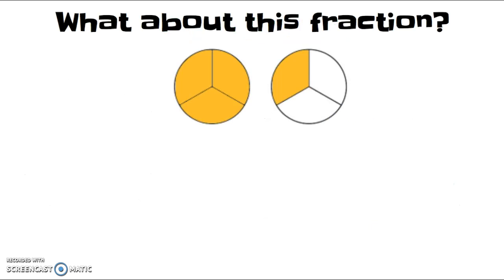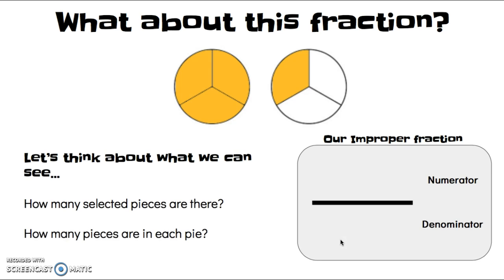So, then what about this fraction? When we look at this one, there's one whole pie colored in, and a piece of another pie. So, how do we write this? What is this that we're seeing? So, there are two different ways that we can represent this fraction.